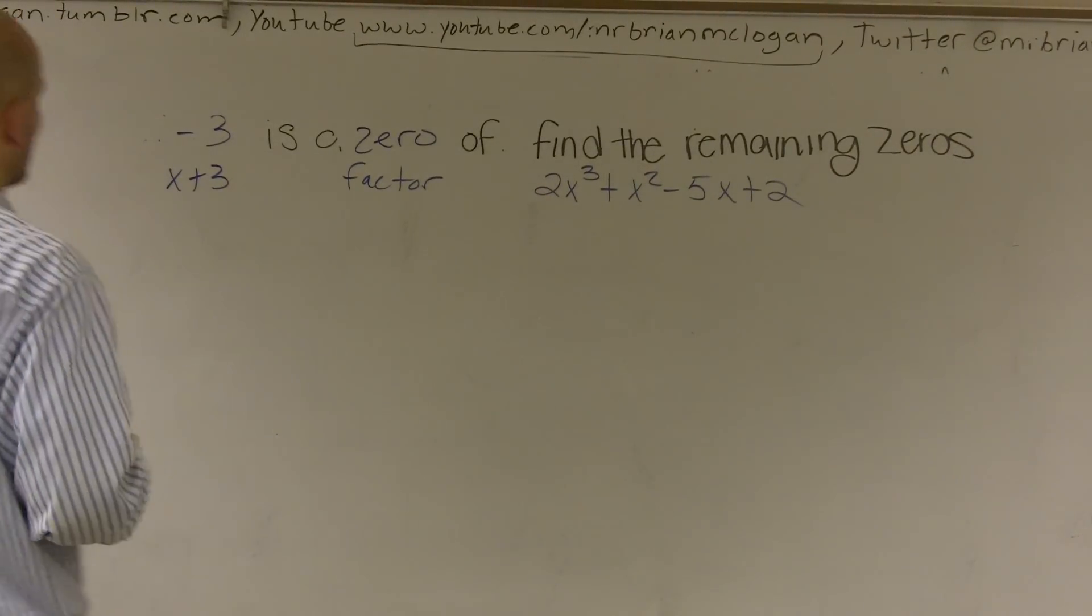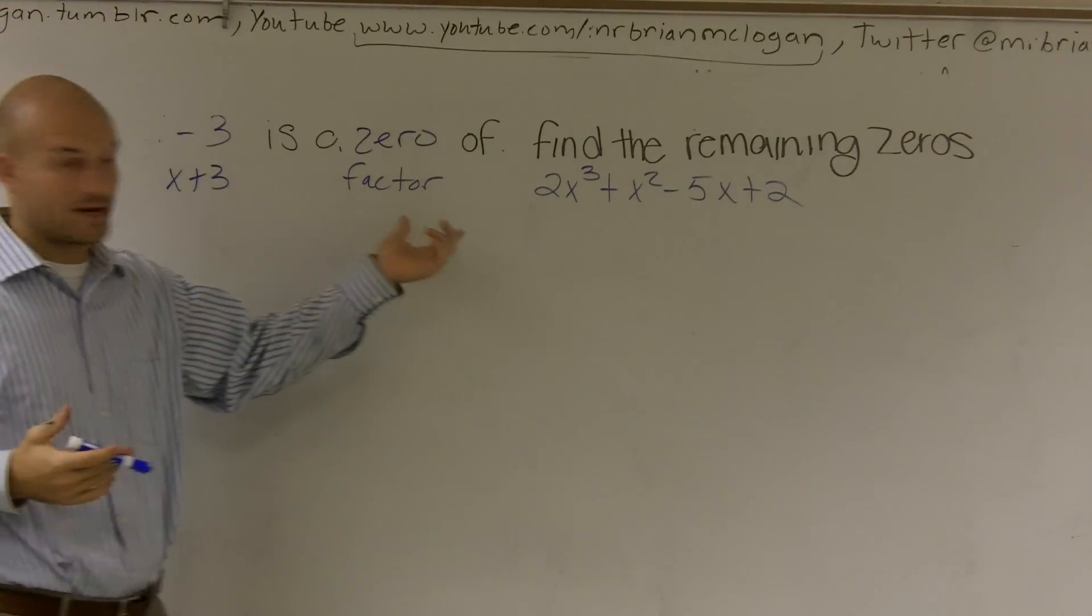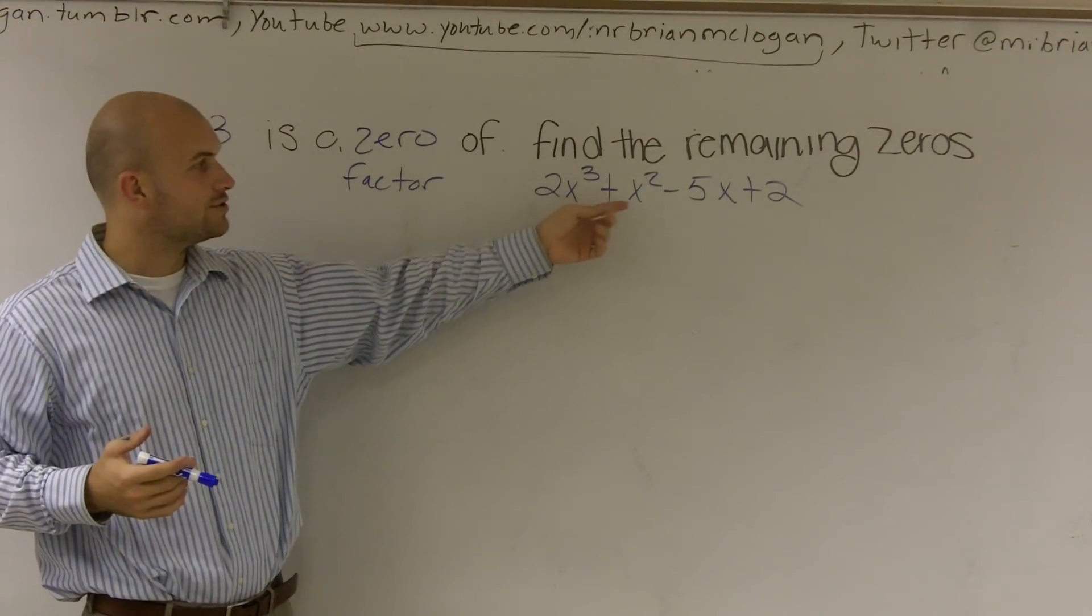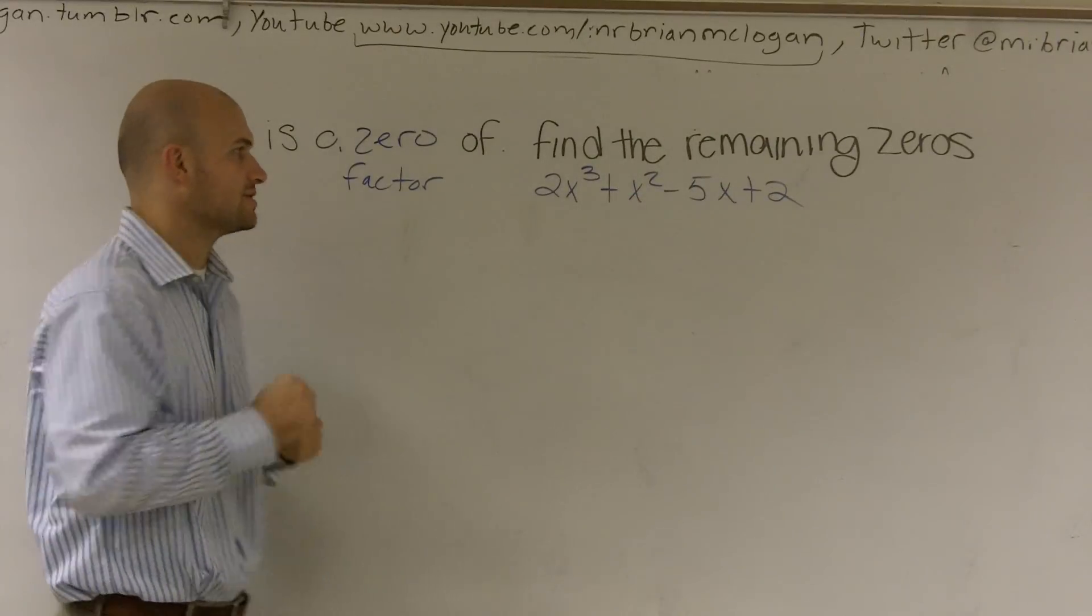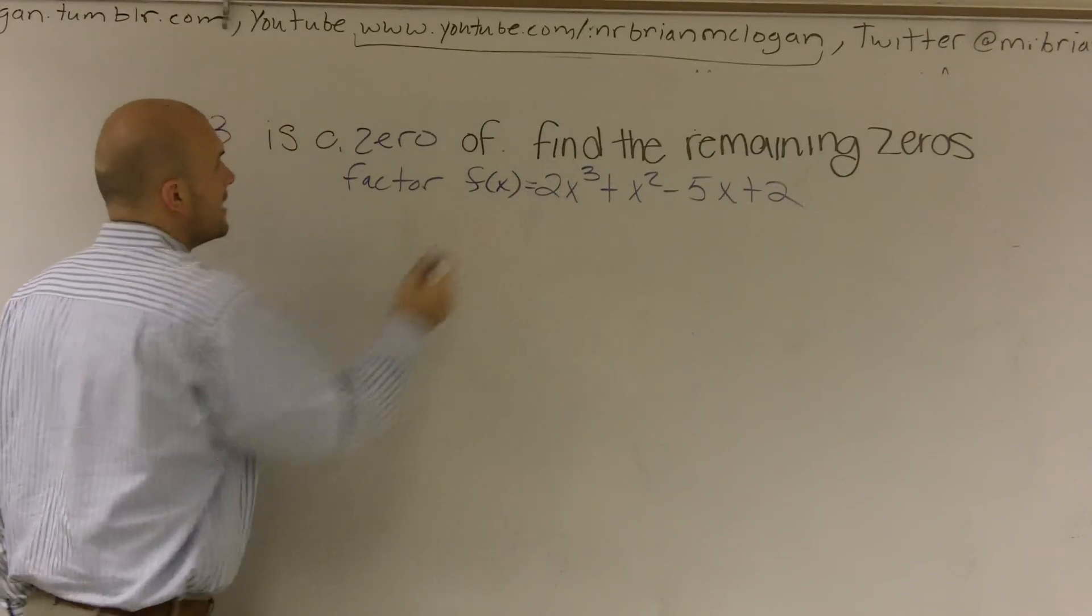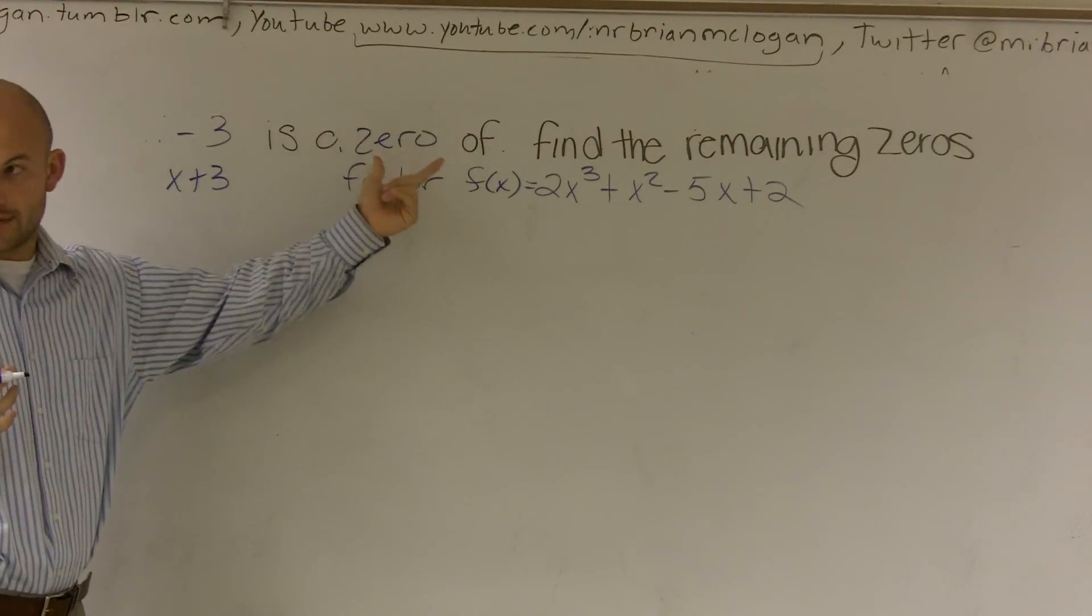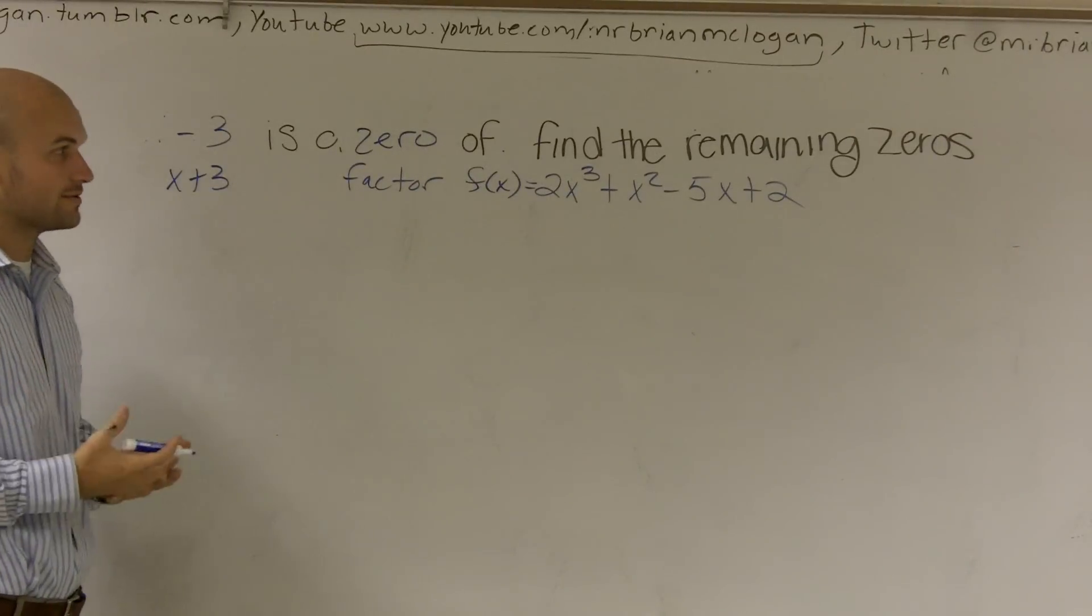All right, so we at least distinguish that in the problem it says x plus 3 is the factor of 2x cubed plus x squared minus 5x plus 2, and that's f of x. And we also said, or you could have said negative 3 is the zero. So we need to figure out the remaining zeros.